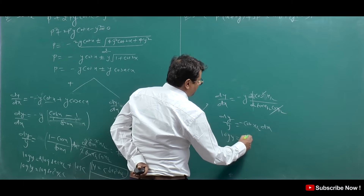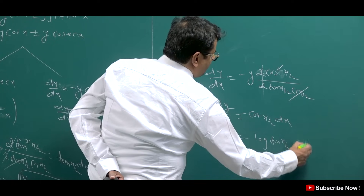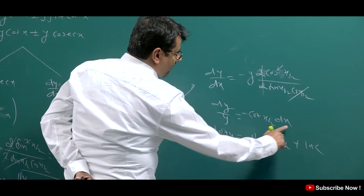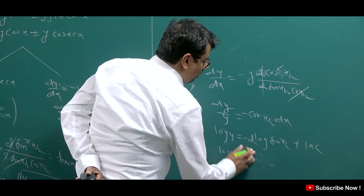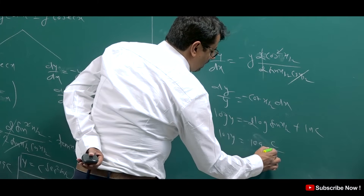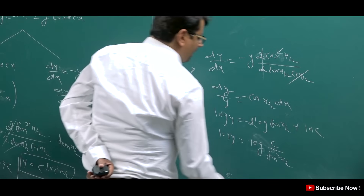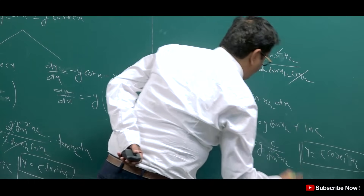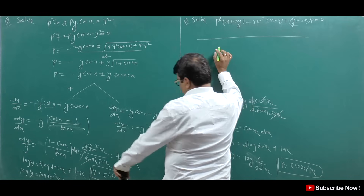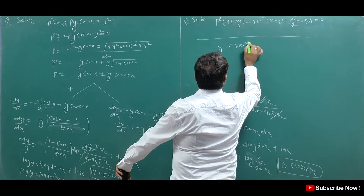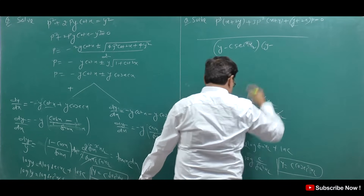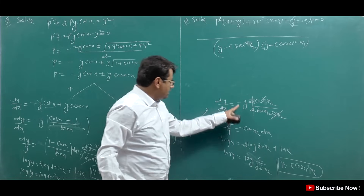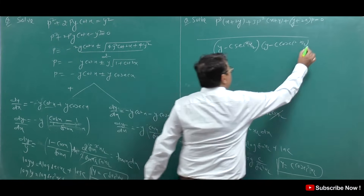Integrating: log y = 2·log|sin(x/2)| + log C = log[C·sin²(x/2)]. So y = C·sin²(x/2), equivalently y = C/cosec²(x/2). The final combined answer for this question is (y - C·sec²(x/2))(y - C·cos²(x/2)) = 0.